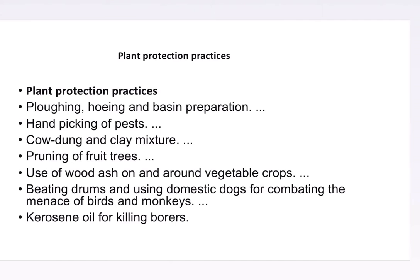Plant protection practices include plowing, hoeing, and basin preparation. Plowing provides aeration and removes pests. Basin preparation protects the soil — it is done both manually and by tools. We bring soil up from below, so any pest eggs present at the bottom are exposed.